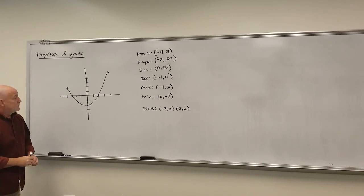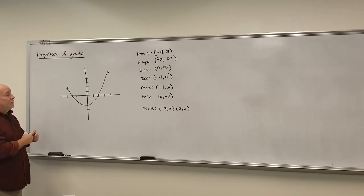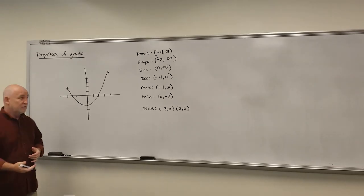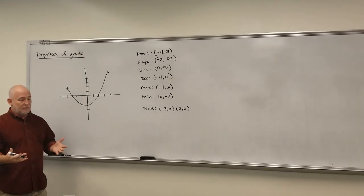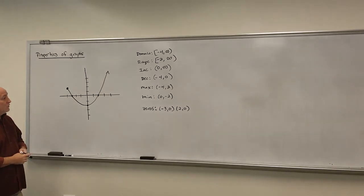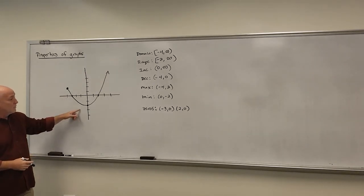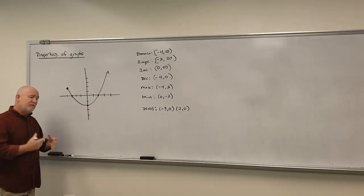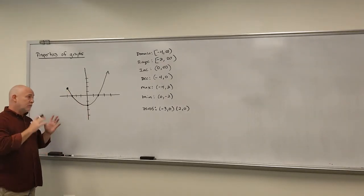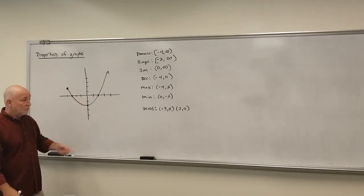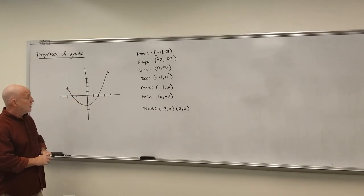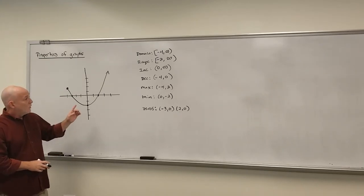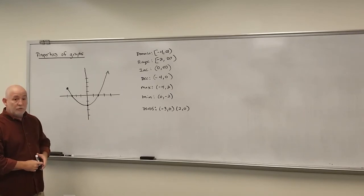So there we go — that's taking a look at some basic features of a graph. From a graph you should be able to find the domain, range, where it's increasing, decreasing, maybe constant, any maximum or minimum points, and any zeros or x-intercepts. The book may also ask for y-intercepts, which are anywhere you cross the y-axis. Being able to interpret a graph like this is really important for things we'll do in the future, so spend the time to make sure you understand all this.